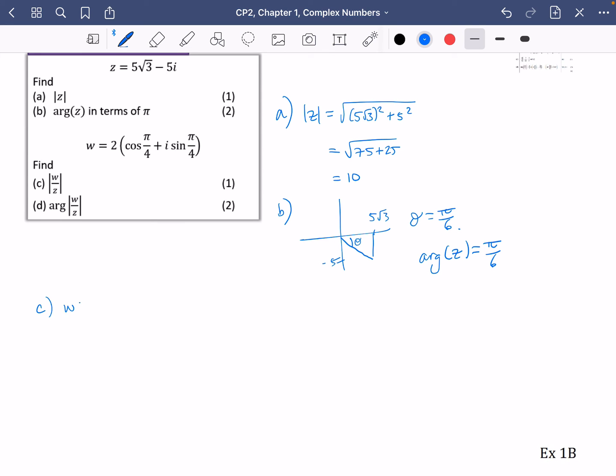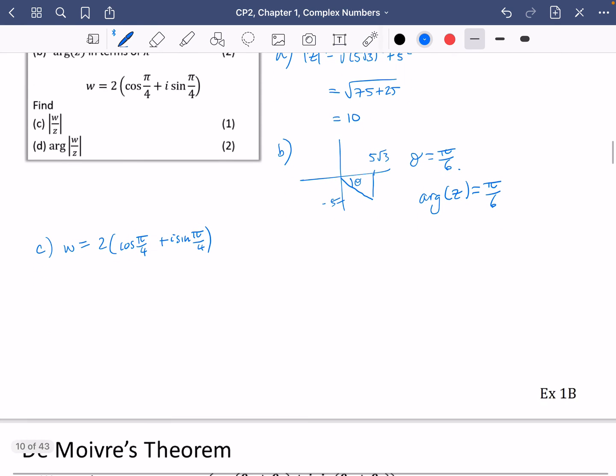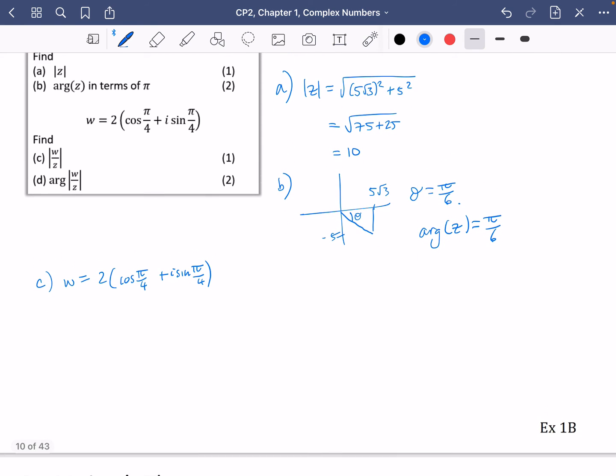Then we've been given a different complex number this time, which is w. And w is 2 cos pi over 4 plus i sine pi over 4. They've given it into this modulus argument form that we've got. So what we're going to do is find the modulus of w divided by the modulus of z. Well, that's going to be pretty easy because the modulus of w is 2 and the modulus of z is 10. So the answer to this bit is a fifth or 0.2.